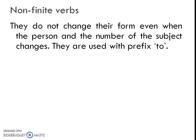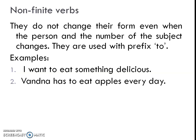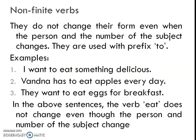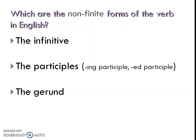Finite verbs are those forms of verbs which change according to the subject. Now let's see non-finite verbs. They do not change their form even when the person and the number of the subject changes. They are used with the prefix 'to'. Examples: I want to eat something delicious, one winner has to eat apples every day, they want to eat eggs for breakfast. The verb 'eat' does not change even though the person and number of the subject changes.